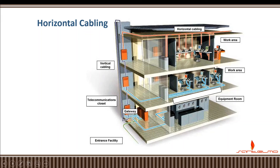From the horizontal cable it is terminated at the wall plates, and from the wall plates going to the workstation in the work area we use a patch cable. The recommended patch cable length is six meters. So you have a horizontal cable with a 90-meter maximum and a patch cable with a 6-meter maximum, totaling 96 meters. The remaining four meters is used inside the telecommunication closet to connect the patch panel to the switch, making the total UTP cable run 100 meters.